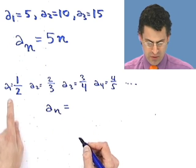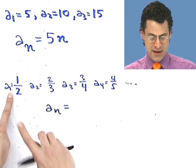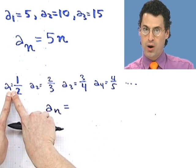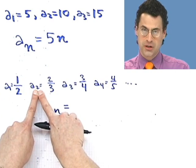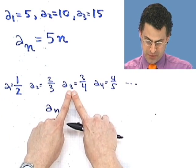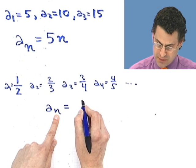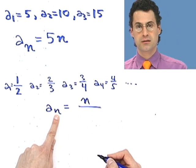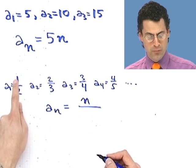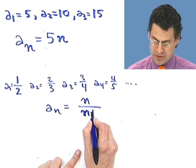a sub n equals? Well, the top always seems to be the same as the index. I have a sub 1 here, and there's a 1. Subscript 2, and I have a 2. Subscript 3, and I have a 3. So it looks like if I have a subscript n, I should put an n here. And on the bottom, I just have one more than the top. So that would be n plus 1.